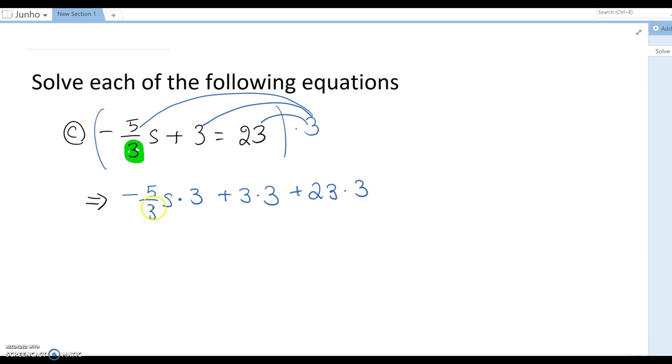Since this is the denominator and that's a whole number here, you can cancel them out, or you just multiply negative 5 and 3, which is negative 15 divided by 3. But to reduce some calculation, you can actually cancel this out. Then it is going to be negative 5s plus 9 equals 69.